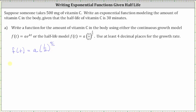Let's first write the function using the units of minutes, since that's what's given. We have f of t equals the starting amount of 500 milligrams, so A is 500, times one-half raised to the power of t divided by c, where since the half-life is 30 minutes, c is 30. So we have t divided by 30 as the exponent.